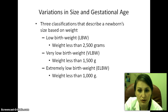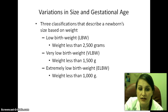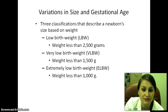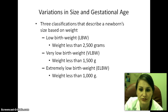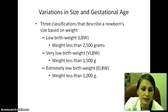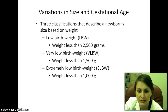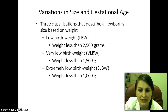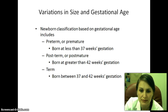Three classifications describe newborn size based on weight: low birth weight is less than 2,500 grams, very low birth weight is less than 1,500 grams, and extremely low birth weight is less than 1,000 grams. Those are often our micro-preemie babies.